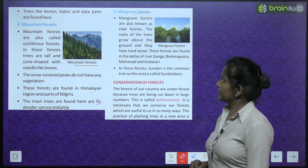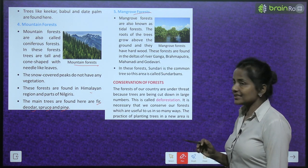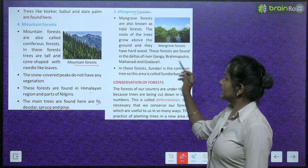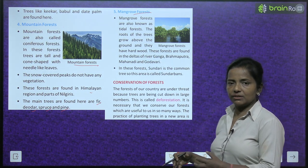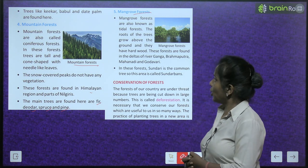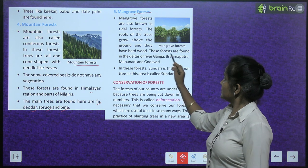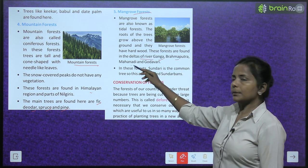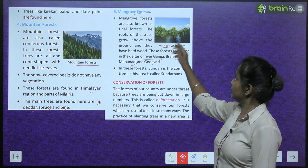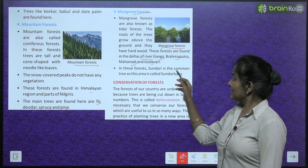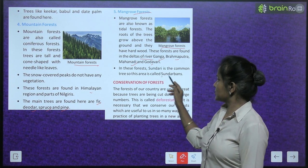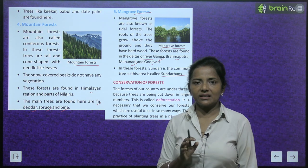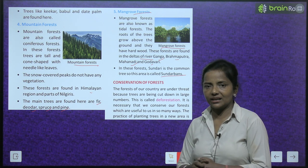Mangrove forests are also known as tidal forests. The roots of the trees grow above the ground and they have hardwood. Inke jo roots hote hain, woh ground se oopar ugte hain aur inka wood bahut hard hota hai. These forests are found in the deltas of rivers Ganga, Brahmaputra, Mahanadi and Godavari. Sundari is the common tree in these forests, which is why this area is called Sundarbans.